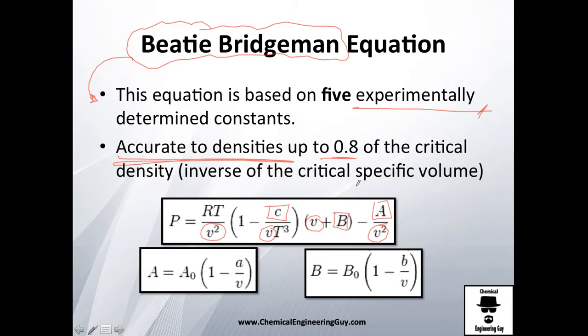If you're achieving 80 percent of the critical density, you're going to start failing - maybe 85 percent is not going to be okay, but anything below, let's say 70 percent or so, is going to be pretty accurate.